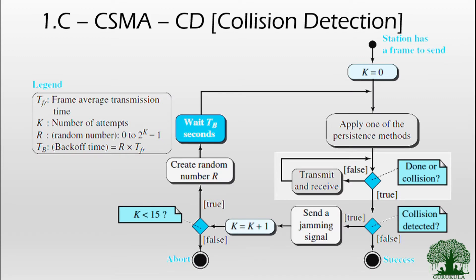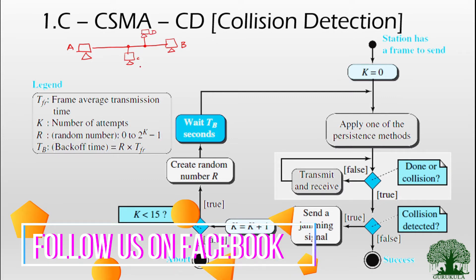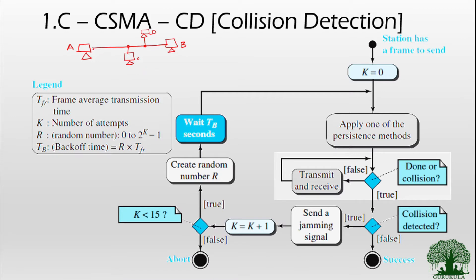Now we will try to understand CSMA CD with a simple flow diagram. Let us take for example that I have a system or node called A, which is connected to a system called B over a shared medium. This channel is also shared by several other systems, so I will call them A, B, C, and D. All these stations are connected on a commonly shared medium. For our discussion, let us assume that A wants to send its data to B, and we will go through the various steps initiated by the CSMA CD algorithm before sending the frame.